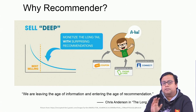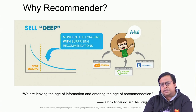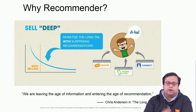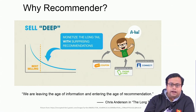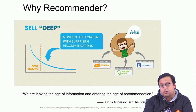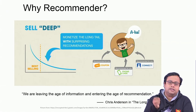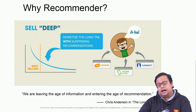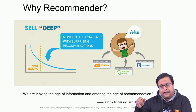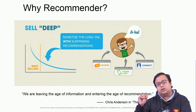For example, when buying a mobile phone, a recommendation for a protective cover appears. You might not have thought of buying one, but because it was recommended and the price was small compared to the phone's price, you buy it. That is cross-selling — an incremental sale that happened because of the recommendation.